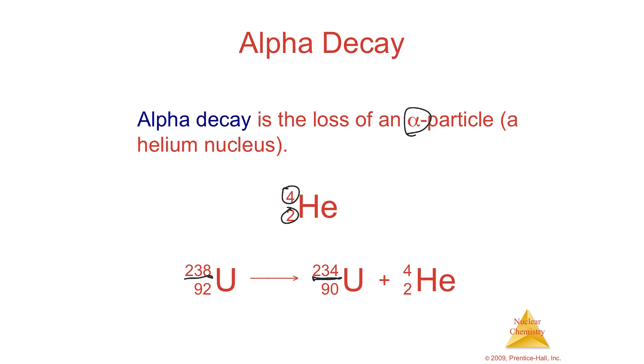So as it drops two neutrons, it'll go from 238 to 234. Here's the other four that was in the 238 originally. And then as it drops from the protons, it'll drop from uranium-92 to uranium-90.